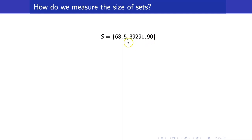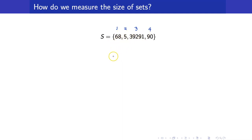Suppose we are given this simple set S. How do we measure the size of this set? We simply count it. So we have 1, 2, 3, 4. Basically, what we are doing there is that we are setting up a 1-to-1 correspondence or a bijection. A 1-to-1 correspondence is another term for a bijection.